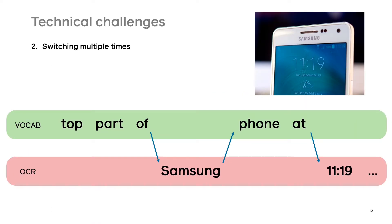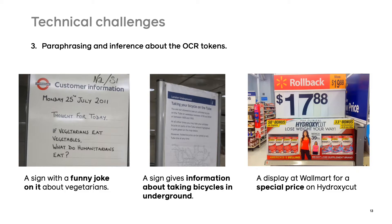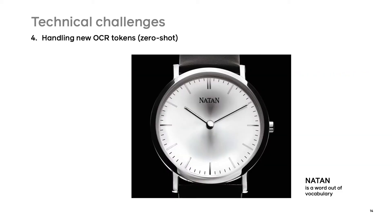The model needs to switch multiple times between vocabulary words and OCR tokens. As in this example, where the model needs to switch to OCR to input the word Samsung, then switch back to vocabulary for the words 'phone' and 'at', and then again to OCR to add 1119. Furthermore, the model may even need to paraphrase the text and infer information from it, as often happens in natural language. Also, the model needs to be able to read new text from the images which was not present in the training set and integrate it in the caption, which could be referred to as zero-shot.